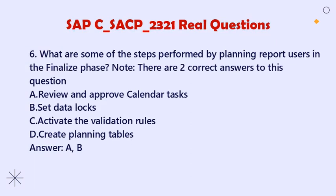Question 6: What are some of the steps performed by planning report users in the finalize phase? Note: There are two correct answers. A. Review and approve calendar tasks. B. Set data locks. C. Activate the validation rules. D. Create planning tables. Answer: A, B.